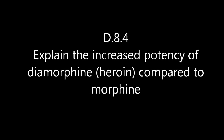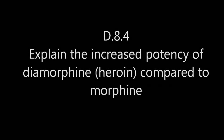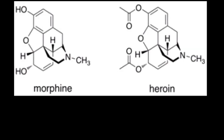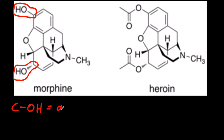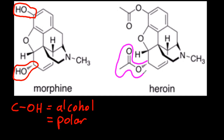Explaining the increased potency of heroin compared to morphine. You can see that both of these molecules have very similar structures, but morphine has two alcohol groups — highlighted there — which give it polar characteristics, and heroin instead of alcohol has ester groups. Esters have a low polarity, so they're less polar.